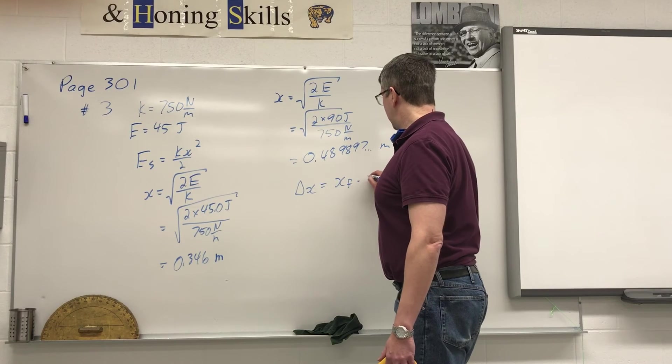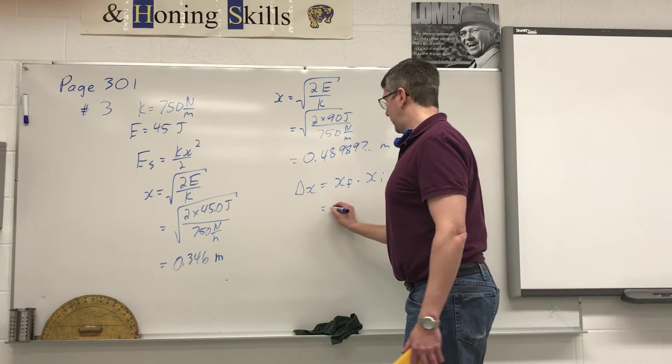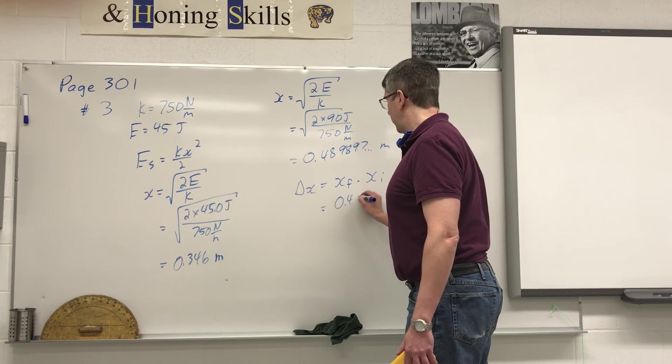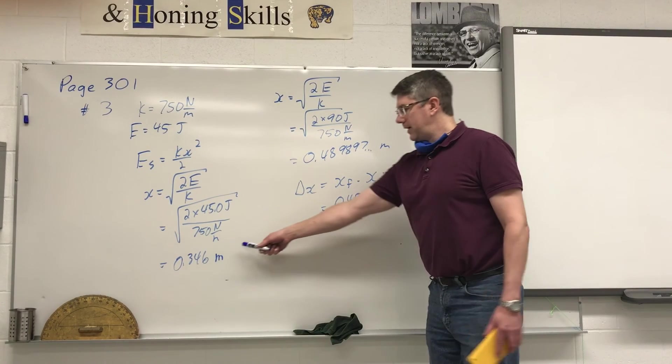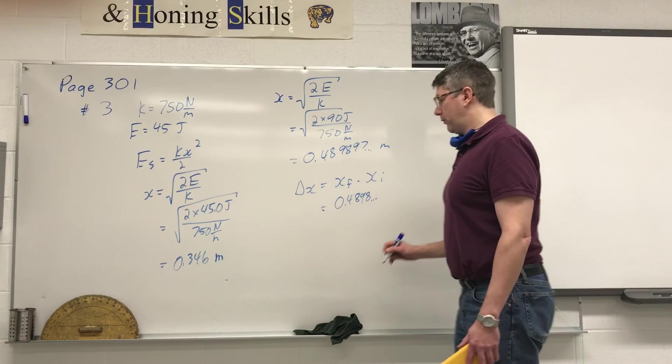it's going to be our final length minus our initial length. So our final length is 0.4898 et cetera meters minus our initial length, 0.346.